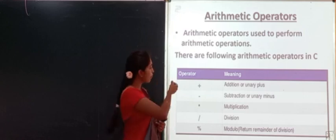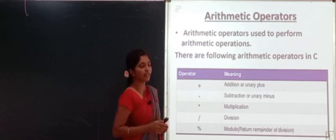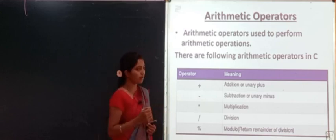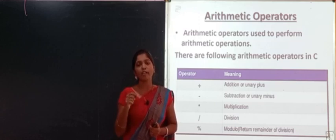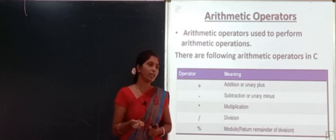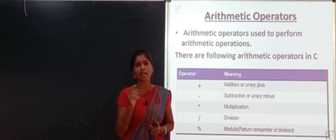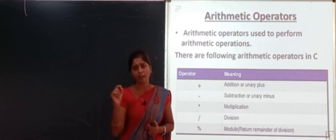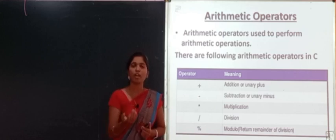Plus and minus can also be used as unary operators with one operand. For example, if you want to add two numbers: add = a + b, where plus is the addition operator. Or if you want to find simple interest: SI = P * T * R / 100, using multiplication and division operators.